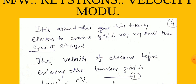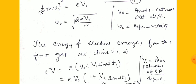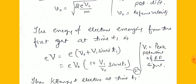The velocity of electrons before entering the buncher grid is given by: ½mV₀² = eV₀, where V₀ is the anode-cathode potential difference. The small v₀ is the reference velocity produced by the electron gun, so v₀ = √(2eV₀/m). The energy of electrons emerging from the first gate at time T₁ is eV = eV₀ + eV₁ sin(ωT₁), since the RF potential is now also applied.